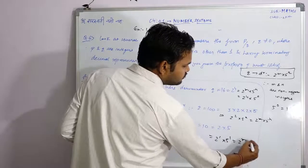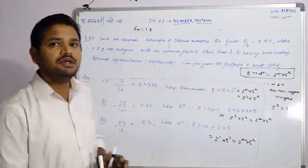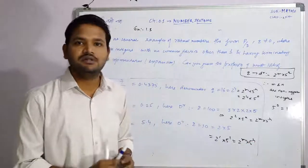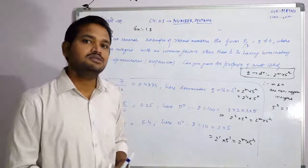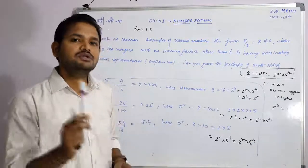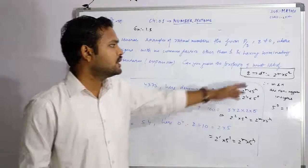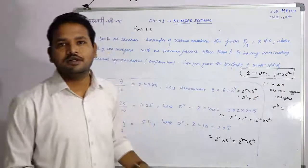That is, 2 raised to m into 5 raised to m. Okay? So this is a pattern. If we see a rational number and the decimal expression is terminating, then q is the denominator. What is q? 2 raised to m into 5 raised to m.